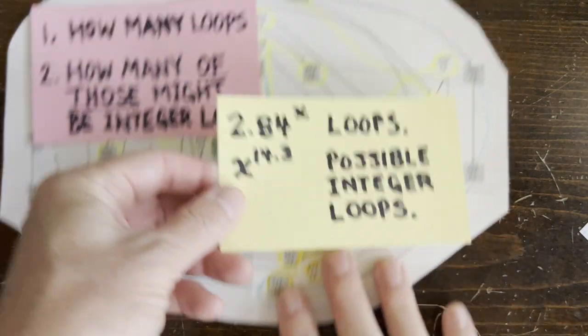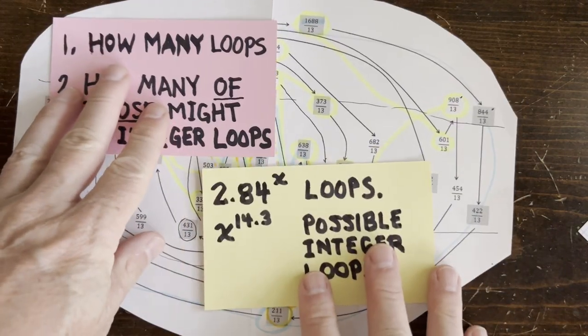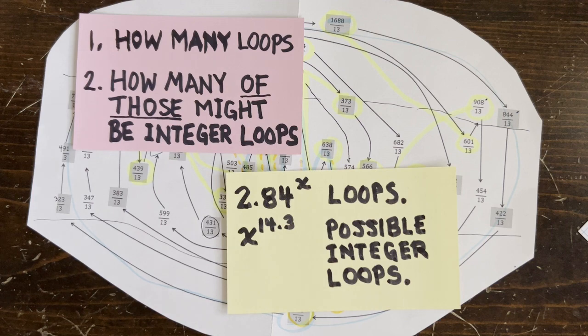So we can summarize. There are 2.84 to the x total loops, but only x to the 14th of them can be integer loops, which means almost none of them.